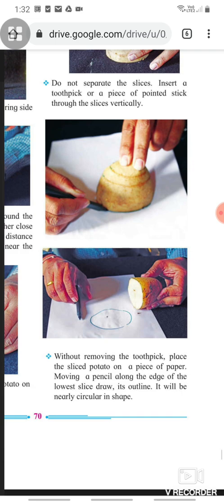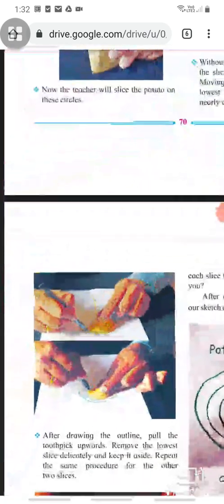Without removing the toothpick, place the sliced potato on a piece of paper. Moving a pencil along the edge of the lowest slice, draw its outline. It will be nearly circular in shape.